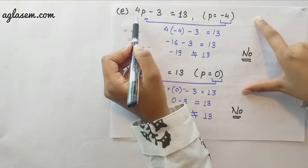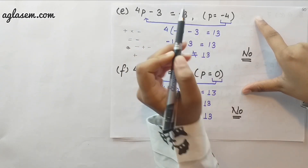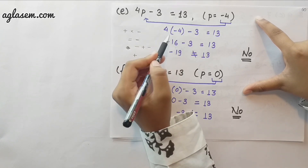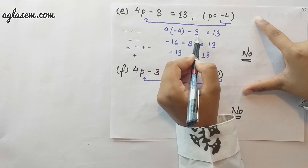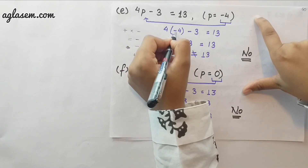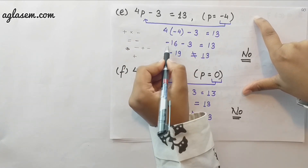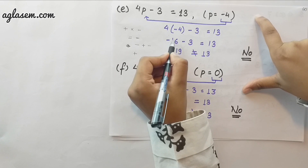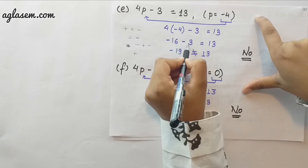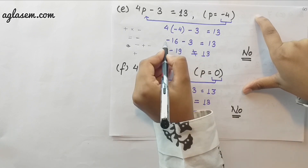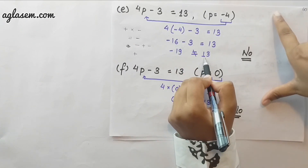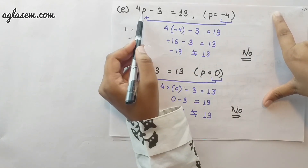Next, the equation is 4p minus 3 equals to 13 and the value of p is minus 4. We put minus 4 into the equation: 4 into minus 4 gives minus 16, and minus 16 minus 3 equals minus 19. Minus 19 is not equal to 13, therefore this value of p does not satisfy the equation.